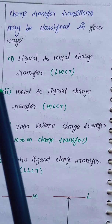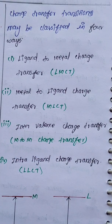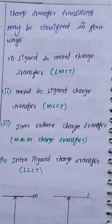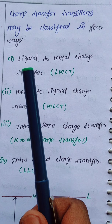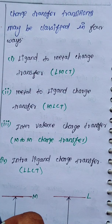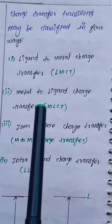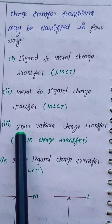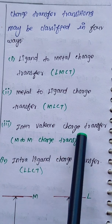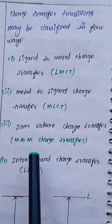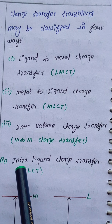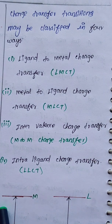Charge transfer transitions may be classified into four types. First is ligand to metal charge transfer, also known as LMCT. Second is metal to ligand charge transfer, MLCT. Third is intervalence charge transfer, which is metal to metal charge transfer. Fourth is intraligand charge transfer, which is ligand to ligand charge transfer.